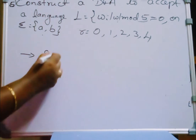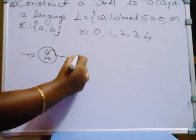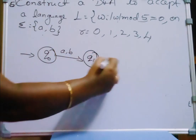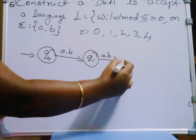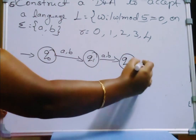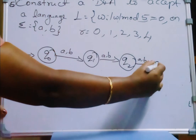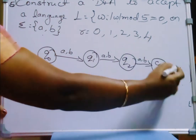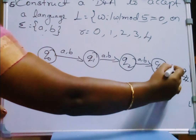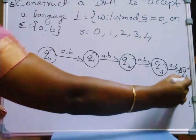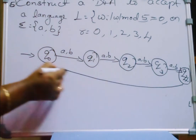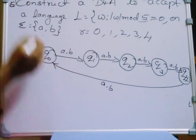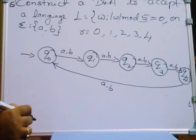We write the states like a chain, as discussed in previous videos. Q0, and the alphabet set has 2 symbols. On reading A or B, it goes to Q1, then Q2, then Q3, and the fourth state Q4. Like a loop chain, from Q4 on reading A or B, it comes back to Q0.